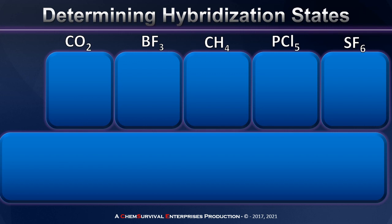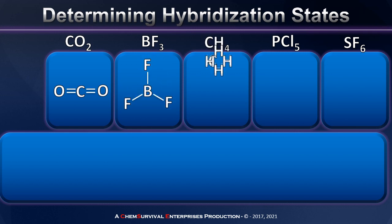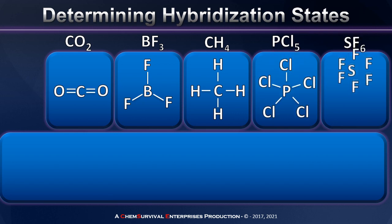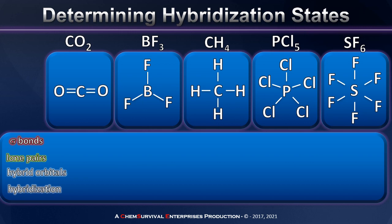Now let's use our rules to determine the hybridization states of a few central atoms. Here are some common molecules you may encounter in your chemistry course: carbon dioxide, boron trifluoride, methane, phosphorus pentachloride, and sulfur hexafluoride. We always begin by determining the Lewis structure of these compounds, which helps us figure out the electronic structure around the central atom. Once I've determined the Lewis structures, I need to look at that central atom and count exactly how many sigma bonds and lone pairs there are.